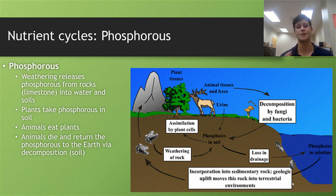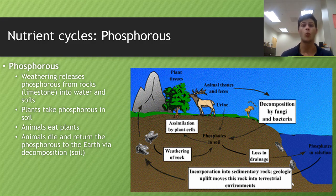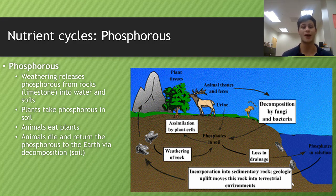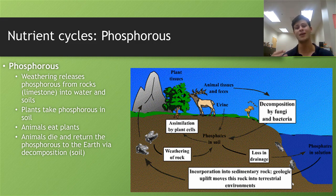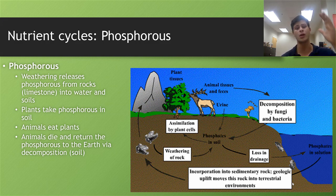The phosphorus cycle is a little simpler and different in that the reservoir of phosphorus is not in the atmosphere like carbon and nitrogen — it is in phosphate rock buried in the sediment. Weathering releases phosphorus from rocks, usually limestone, into the water and soil. Plants absorb phosphorus through their roots and incorporate it into their biomass; animals eat the plants, and when plants die, they return the phosphorus back into the soil. Phosphorus never actually reaches the atmosphere — it stays in rocks, soils, or in aquatic environments in the water column or ocean sediment.